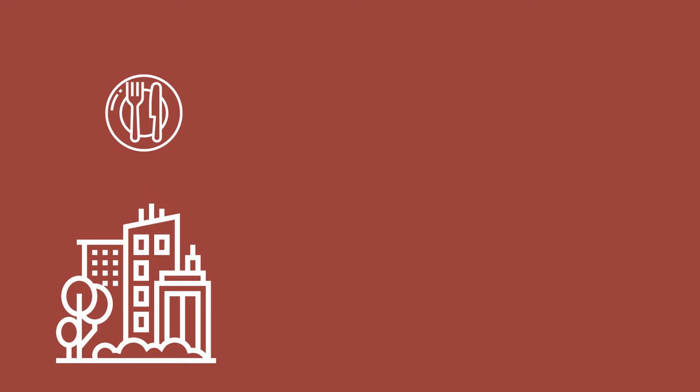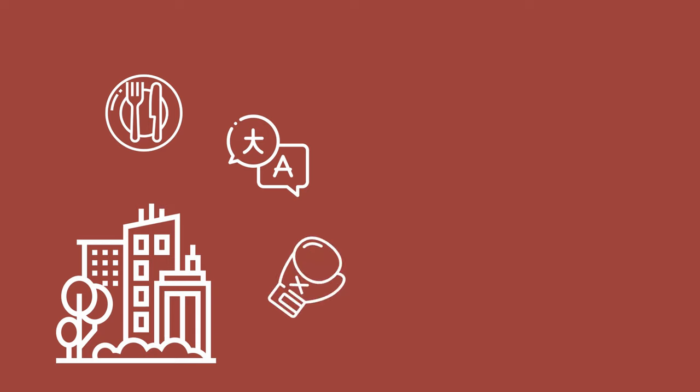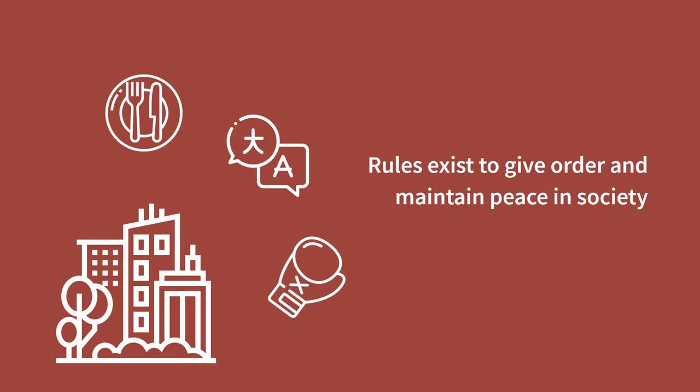There are many kinds of rules in society. From the 'don't talk when your mouth is full' of dining etiquette, to the subject-verb agreement of language grammar, and the no-hitting below the belt of sports — rules are everywhere. Rules exist to give order and maintain peace in society. But one of the most important rules that all of us have to follow, to ensure everyone's well-being, is what is called moral standard.